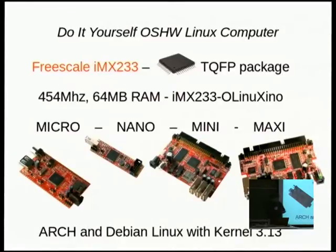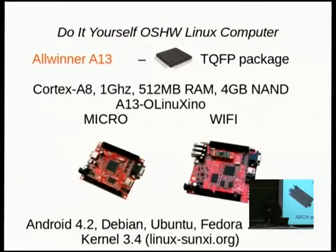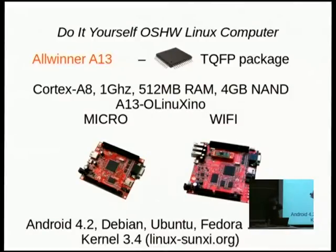Of course, this processor has humble specifications — only 64 megabytes of RAM and only 400 MHz — and people immediately started comparing with Raspberry Pi, saying it's open source but too slow. Then we found the Allwinner A13, also in a TQFP package, but Cortex-A8, running at one gigahertz, about four times faster than the ARM11 used in Raspberry Pi.